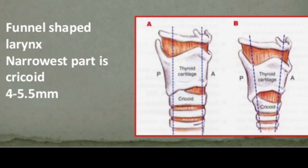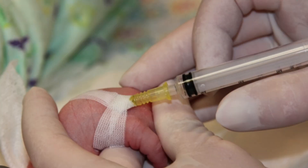You may be asking: why an uncuffed tube? Remember the shape of a neonate's trachea — the funnel-shaped larynx is the narrowest part at the cricoid, measuring only 4 to 5.5 millimeters. Therefore, it acts as a natural cuff, and you could cause necrosis should you use a cuffed tube, especially one that is not checked correctly. Therefore, the typical ET tube in the neonatal population is uncuffed.